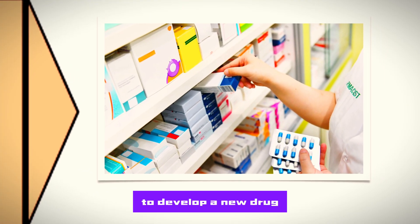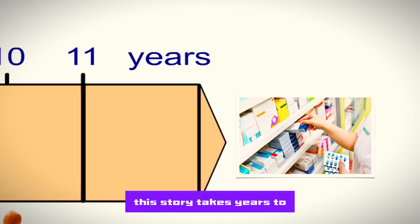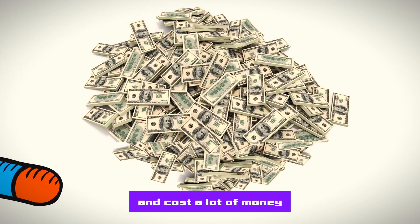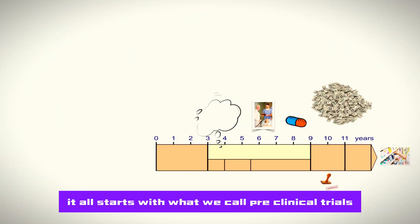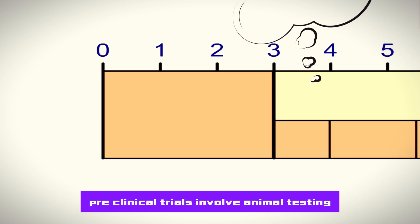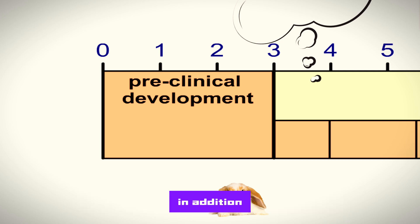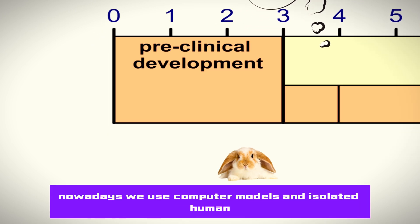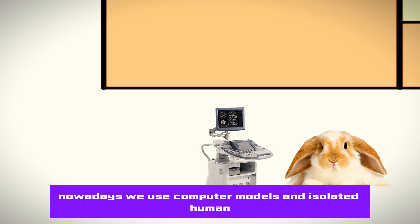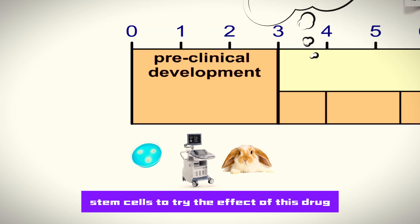Here are the series of events to develop a new drug. This story takes years and costs a lot of money. It all starts with what we call preclinical trials. Preclinical trials involve animal testing. In addition, nowadays we use computer models and isolated human stem cells to try the effect of this drug.